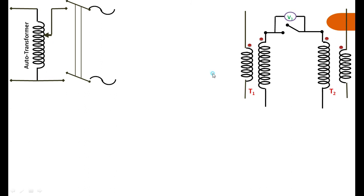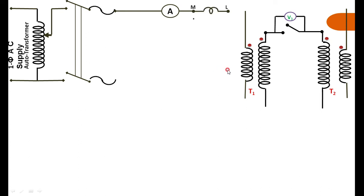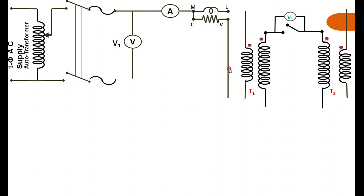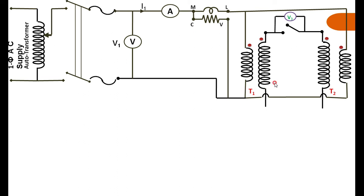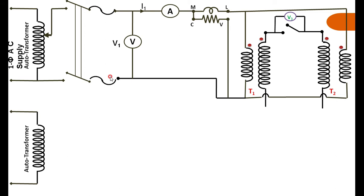The primary side is connected with an ammeter, wattmeter (current coil M and N), potential coil of the wattmeter, and a voltmeter. The two primary windings are connected in parallel — both ends connected together and back to the supply. This completes the initial setup.